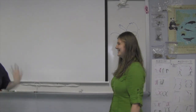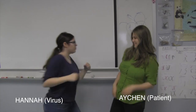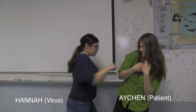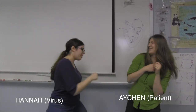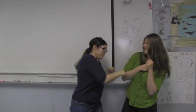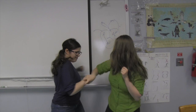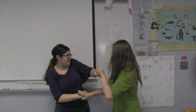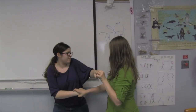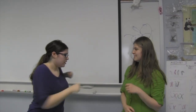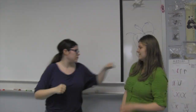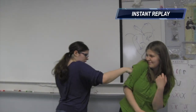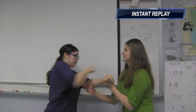This is Hana, who represents a virus. This is Aishin, who represents the host or the patient. It takes Aishin some time to be able to stop Hana during the primary immune response. In the secondary immune response, because of the memory cells, Aishin is able to quickly defeat Hana.